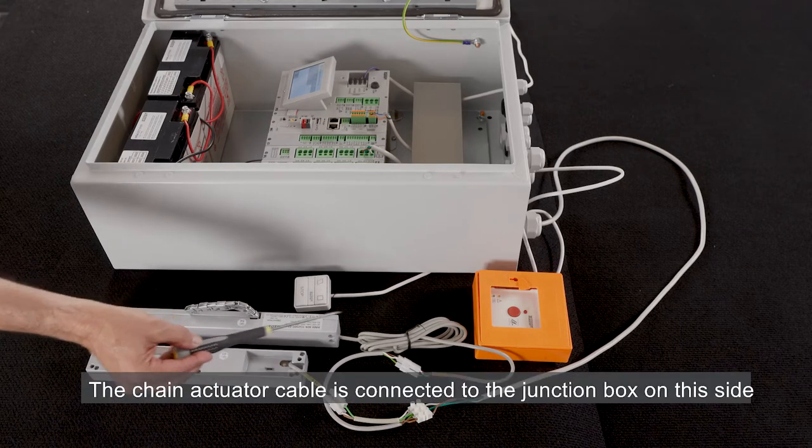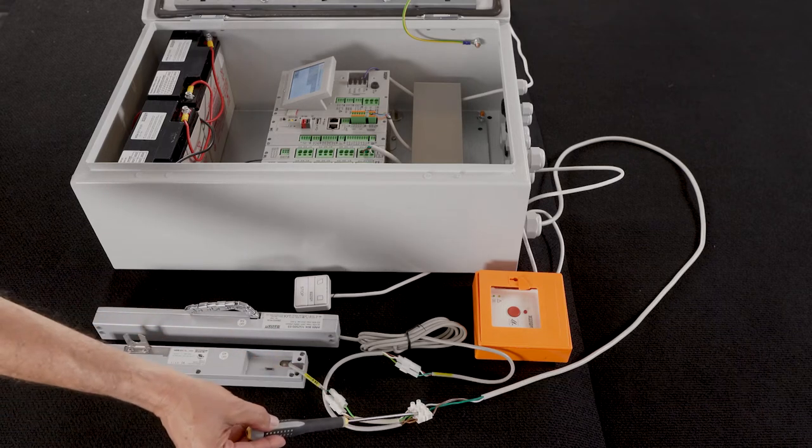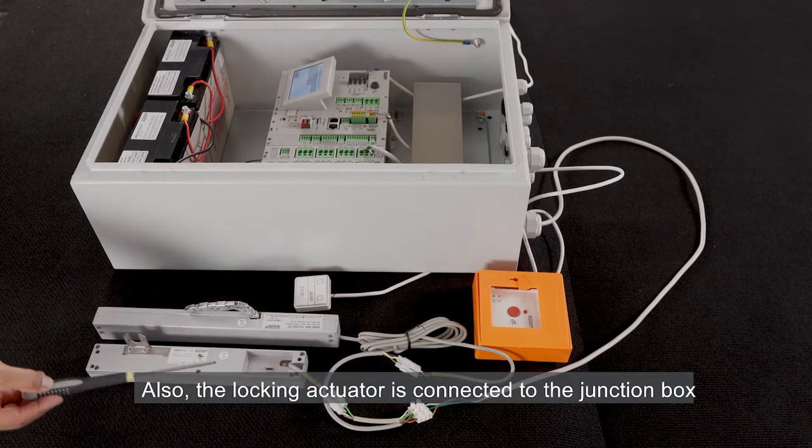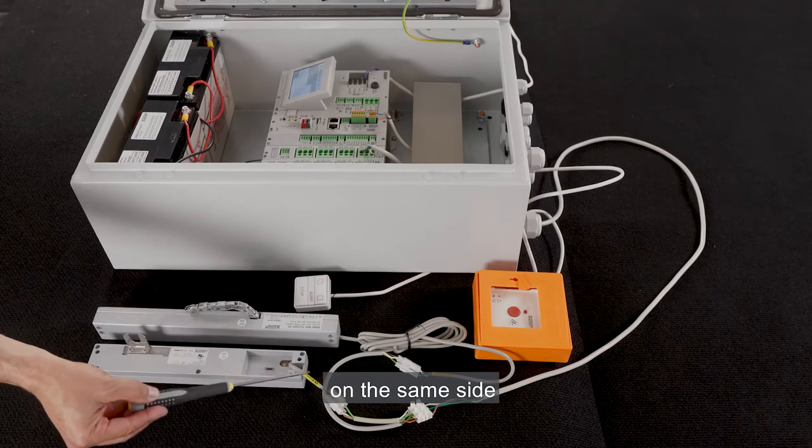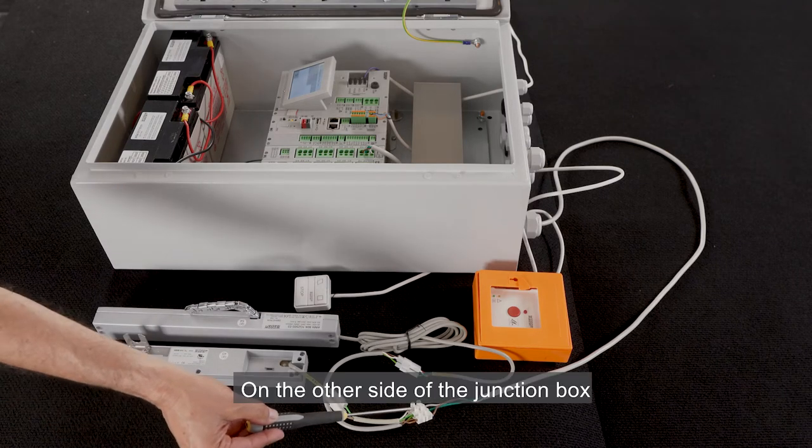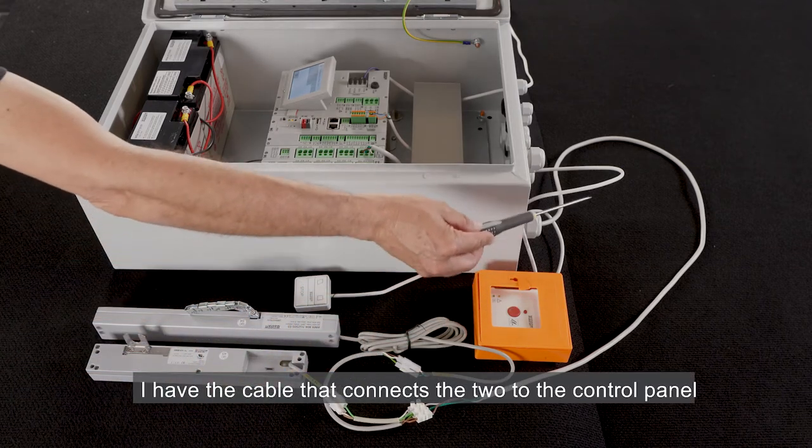The chain actuator cable is connected to the junction box on this side. Also the locking actuator is connected to the junction box on the same side. On the other side of the junction box I have the cable that connects the two to the control panel.